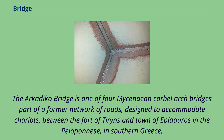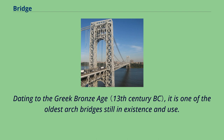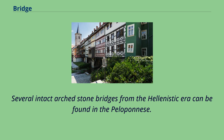The Arcadiko Bridge is one of four Mycenaean corbel arch bridges, part of a former network of roads designed to accommodate chariots between the fort of Turins and the town of Epidorus in the Peloponnese, in southern Greece. Dating to the Greek Bronze Age, it is one of the oldest arch bridges still in existence and use. Several intact arch stone bridges from the Hellenistic era can be found in the Peloponnese.